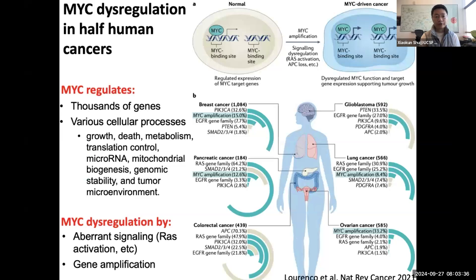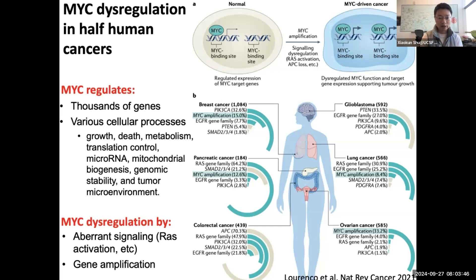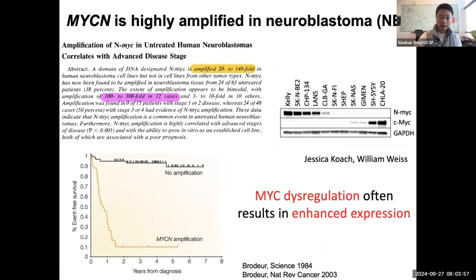MYC is dysregulated in over half of all human cancers, likely because it can regulate thousands of genes and a diverse set of cellular processes. MYC is dysregulated by aberrant signaling, such as RAS, and also by gene amplification. One example is MYCN.